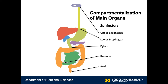Between all of the main organs, there is a series of sphincters. For example, between the esophagus and the stomach is the lower esophageal sphincter. There's another important sphincter called the sphincter of Oddi. It doesn't separate compartments, but it is the sphincter that allows for secretions from the gallbladder, including bile, to be secreted into the small intestine.